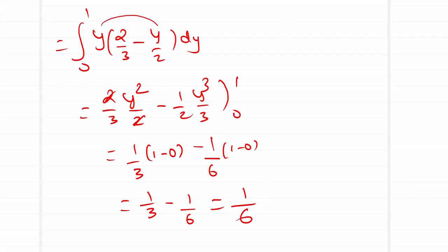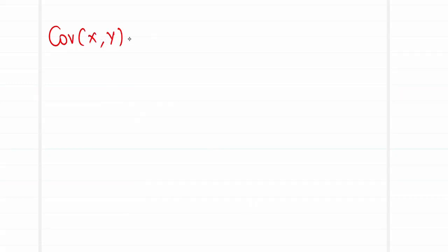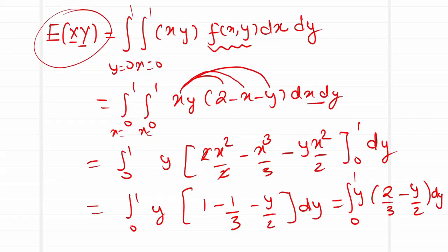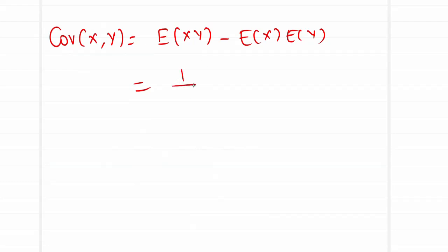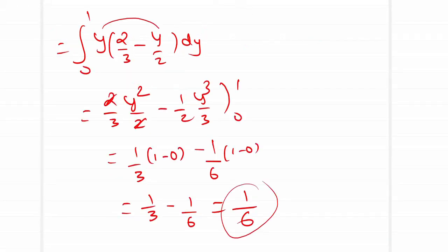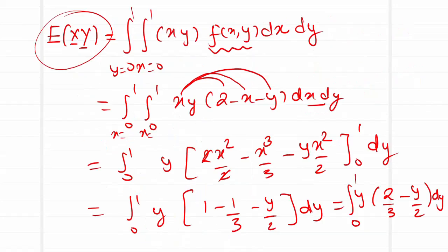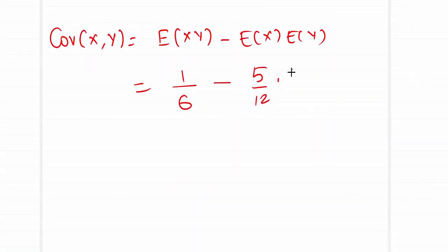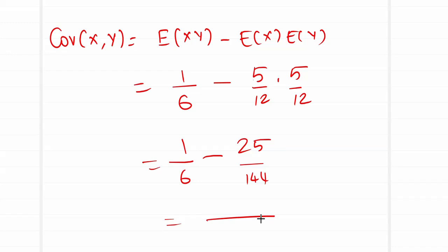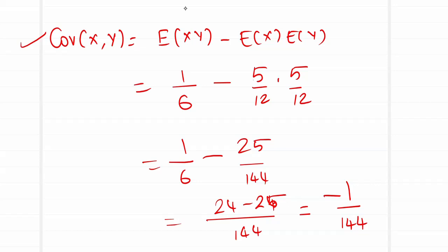Now the numerator: Cov(X,Y) = E[XY] - E[X]·E[Y] = 1/6 - (5/12)·(5/12) = 1/6 - 25/144. Converting: 1/6 = 24/144, so Cov(X,Y) = 24/144 - 25/144 = -1/144. The covariance, which is the numerator of the correlation coefficient, is -1/144.